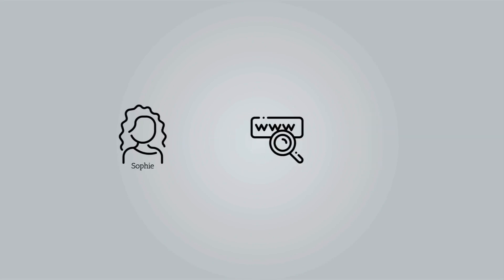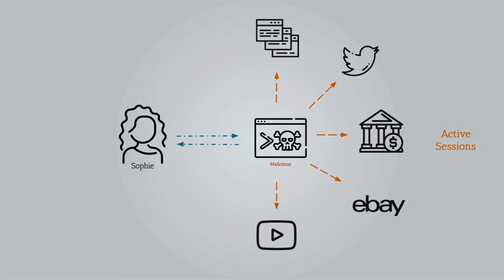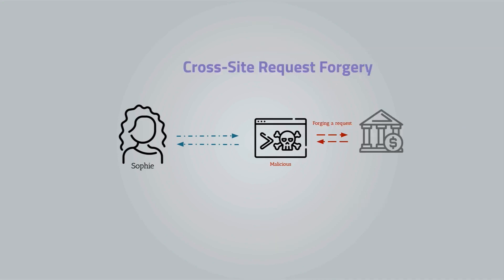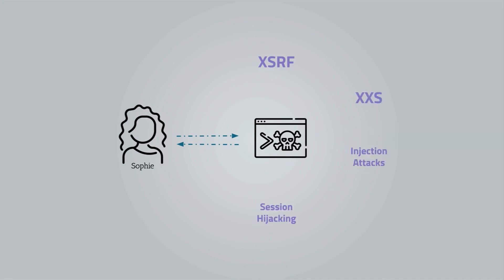Sophie was looking for something on the web and she visited a malicious website that tried to take advantage of the fact that Sophie stays authenticated in her trusted websites, and called her credit card data through a script as if the request was being made from the original website. This is called cross-site request forgery, or CSRF. This is just one example of the threats users like Sophie are exposed to every day on the internet.